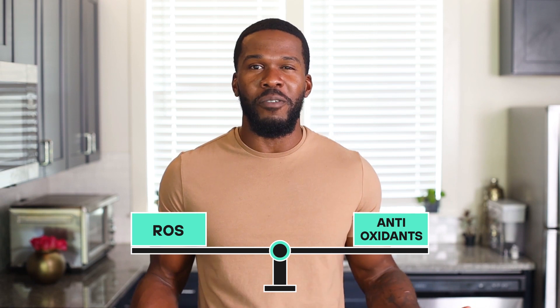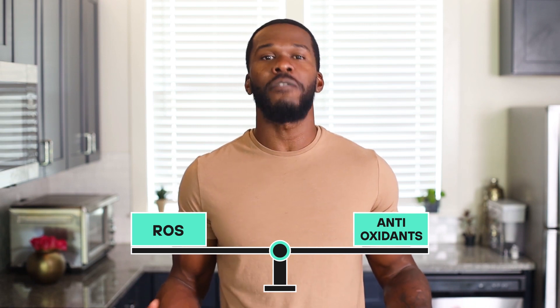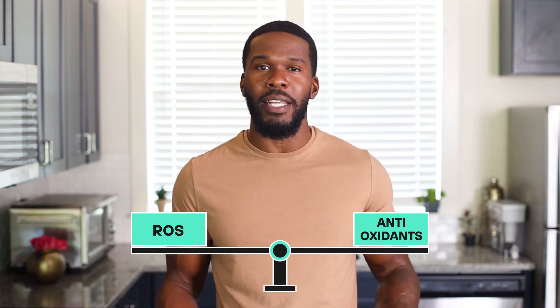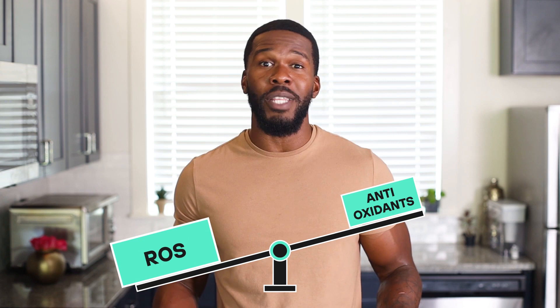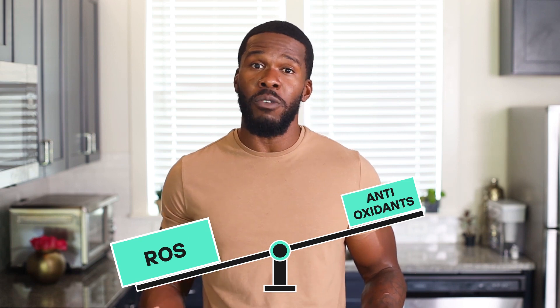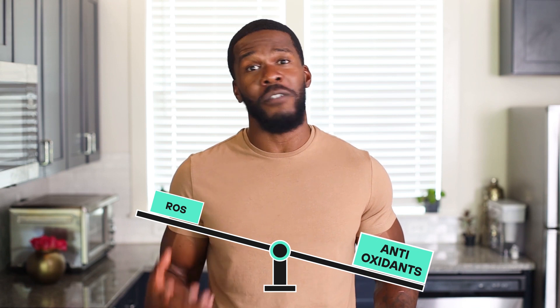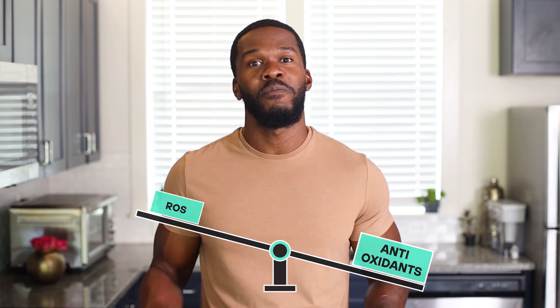Here's how. Let's imagine a seesaw for a second, with ROS on one side and antioxidants on the other. In an ideal environment, these two exist in a state of balance. ROS become dangerous when they either accumulate, which throws off this state of balance, or when they become entirely depleted, also throwing off this state of balance.